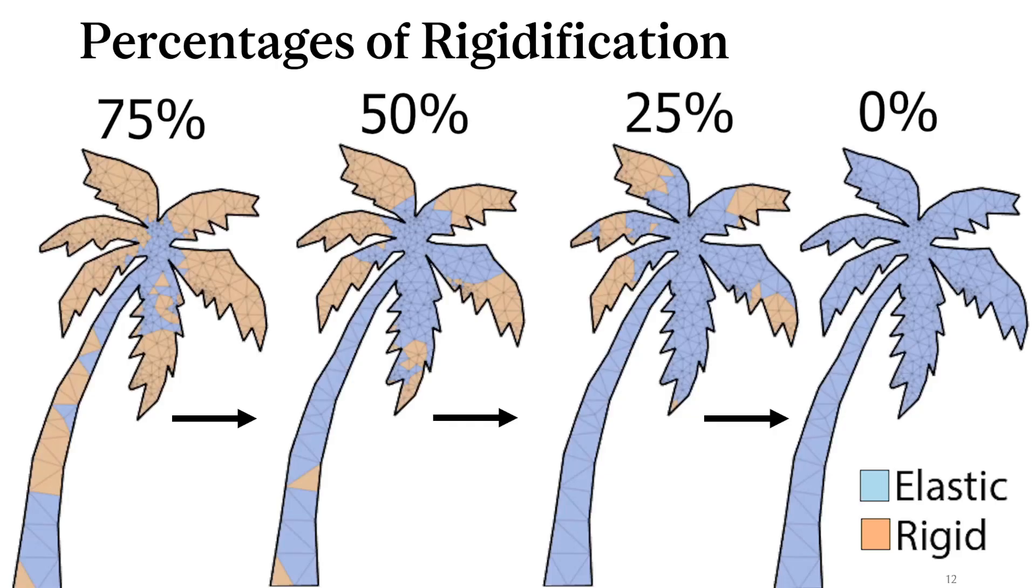Here's a visual representation of what a progression of layers could look like. In this case, we start from aggressively rigid and elastify gradually. We can choose arbitrary percentages of rigidification for each layer as well as the number of iterations spent on the layers.